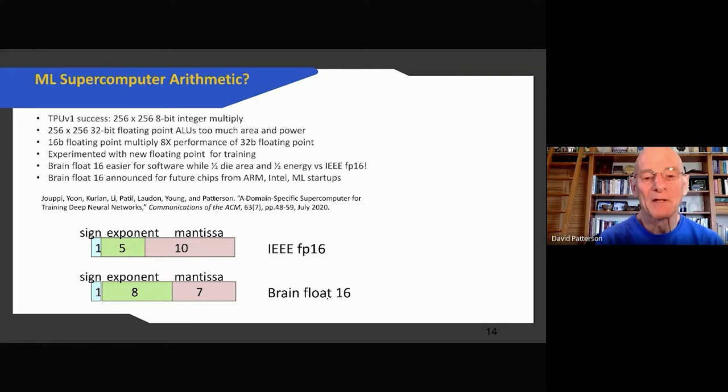So this is a great result because it's faster, it's less die area, because the multiplier dominates. The multiplier at seven bits is half of the die area of a 10-bit multiplier, and it's also half the energy. So it works better for software, less hardware, less energy. So Brain Float is a much better match to machine learning training. And in fact, as a result, everyone else has embraced it. ARM, Intel, and many startups have decided to include Brain Float for machine learning.